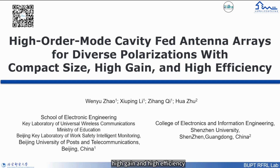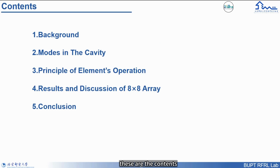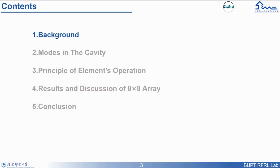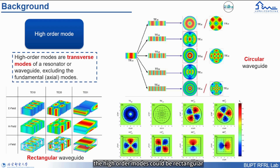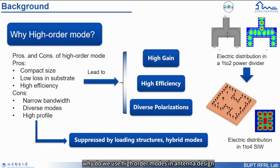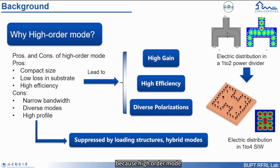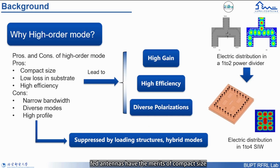These are the contents. We start from the background: high order modes are transverse modes of a resonator or waveguide, excluding the fundamental axial modes. The high order modes could be in rectangular waveguides and circular waveguides. We use high order modes in antenna design because high order mode fed antennas have the merits of compact size and low loss in the substrate.